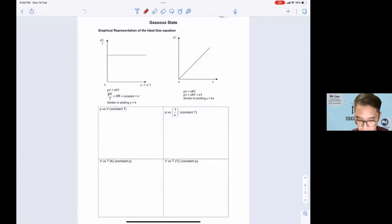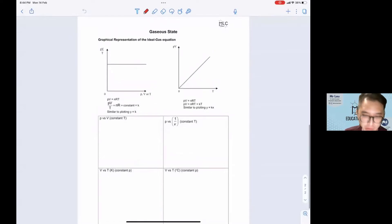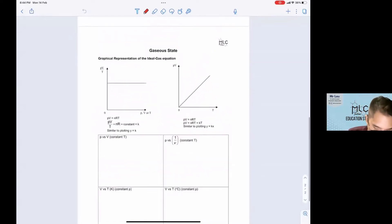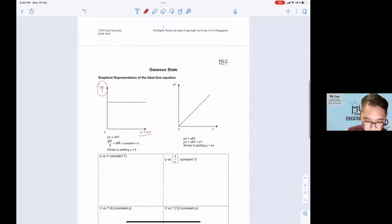Today we will be looking at the Geisha State chapter. For this chapter you will be expected to be able to draw graphs. So I'll be teaching you how to draw the graphs today. For example, if you are asked to sketch a graph of PV over T against either PV or T, this is what you do.